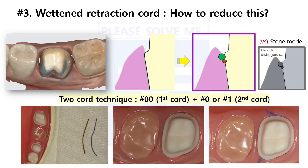My method involves inserting two cords at the same time and scanning without removing them. Therefore, the suppressed fluid does not suddenly rise to the margin surface. I prefer to use the combination of cord number 00 and 0 together. When we use this combination, the second cord can be located at the same level as the gums. The scanner can tell colors apart unlike the stone model, so the technician has no problem distinguishing the margins even if they are at the same height. However, if you leave the cord inserted for too long, it will absorb moisture and swell like a sponge. Therefore, it is necessary to complete the scan mission as quickly as possible after inserting the cords.